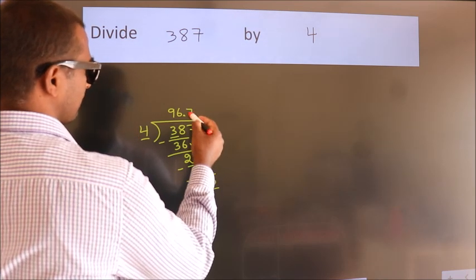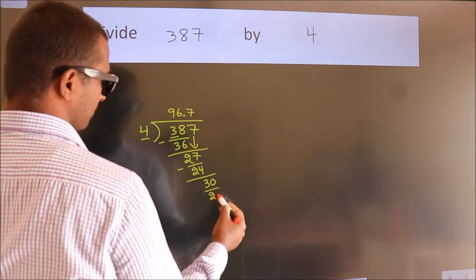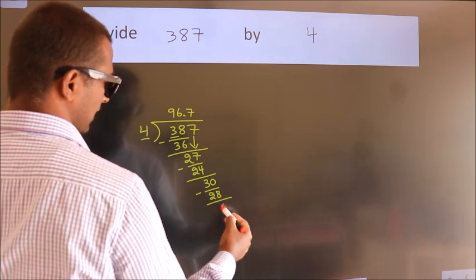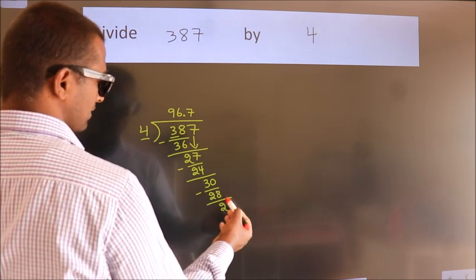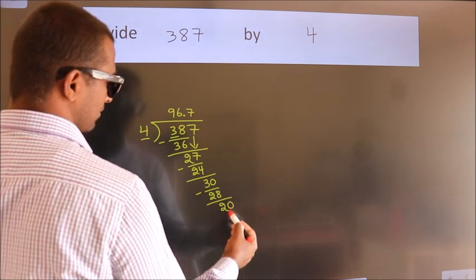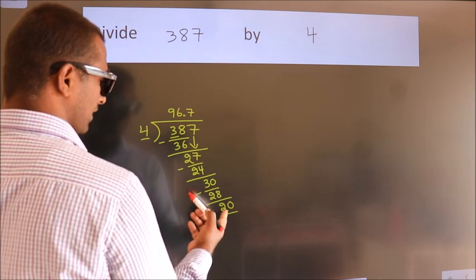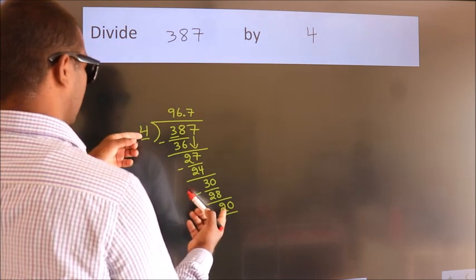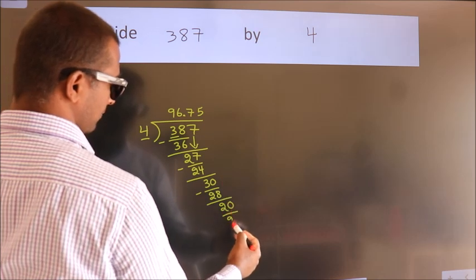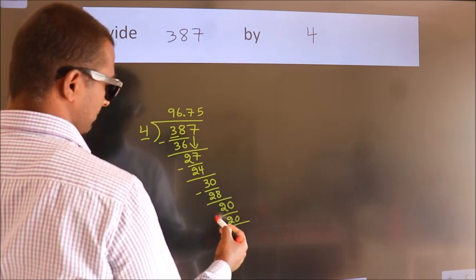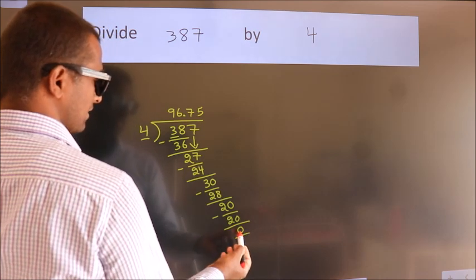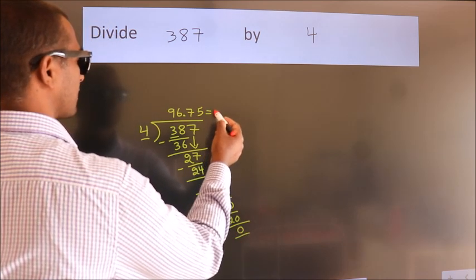Now we subtract, we get 2. After this we already have the decimal so directly take 0, so 20. When do we get 20 in the 4 table? 4 times 5, 20. Now we subtract, we get 0. We got remainder 0, so this is our quotient.